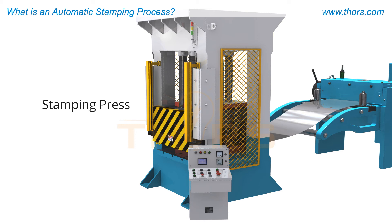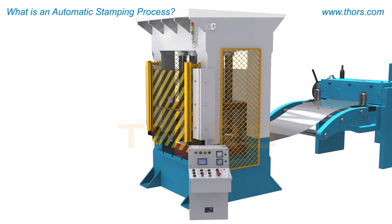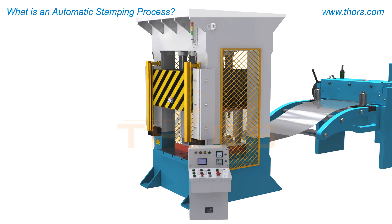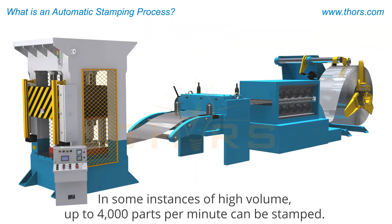The press then returns to its open position as the material indexes and a new blank is introduced. This allows the stamping process to occur in a continuous cycle. In some instances of high volume, up to four thousand parts per minute can be stamped.